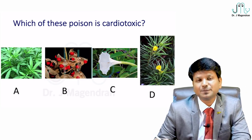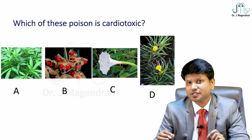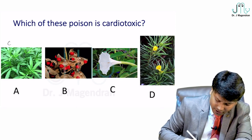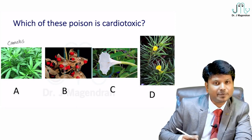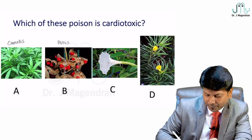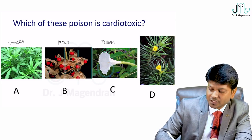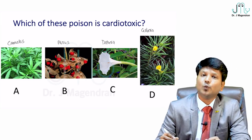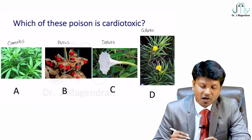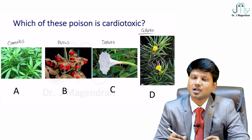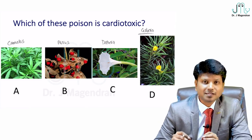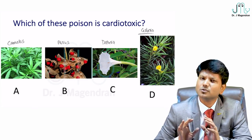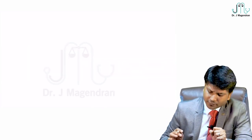Which of these poisons is cardiotoxic? There are two steps in solving this question: first identify the poison, then identify which is cardiotoxic. The first picture is Cannabis, second is Abrus Precatorius, third is Datura Alba, and the last one is Cerbera Thevetia — your yellow oleander. Cerbera Thevetia is cardiotoxic. To answer this, you need to learn the classification of poisons.